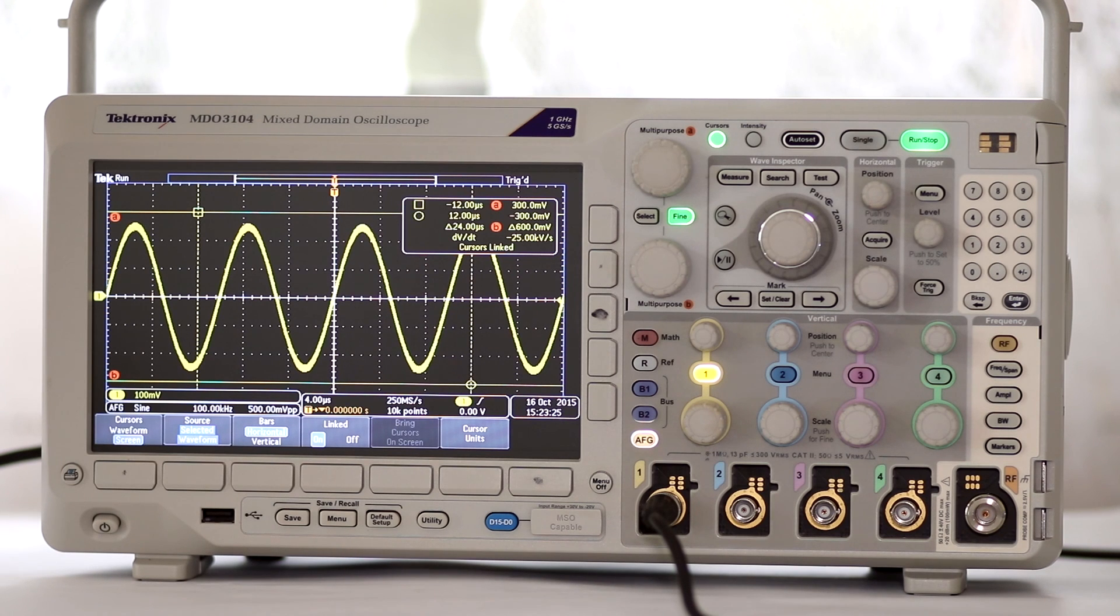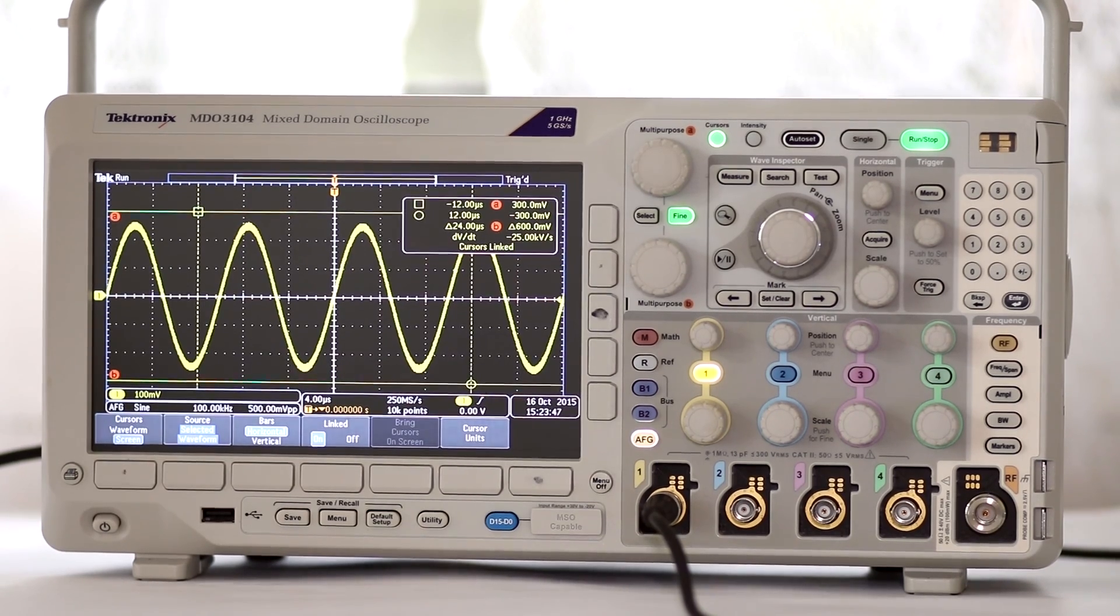In the screen mode, cursors are linked and unlinked by toggling the fourth soft key from the left. That's the basic operation of the cursor function in the Tektronix MDO 3104 oscilloscope. Thanks for watching. New videos are added periodically, so check back frequently.